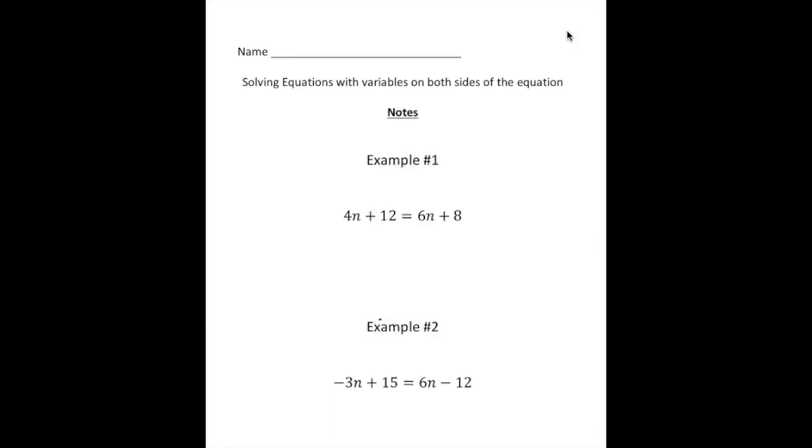So what we're going to do is we're going to do some problems together so please copy right down and then there'll be something for you to try by yourself and then you can see how you did at the end. So let's take a look at your notes here and the first problem we have is 4n plus 12 equals 6n plus 8. So I'm sure you can tell there's a variable on both sides.